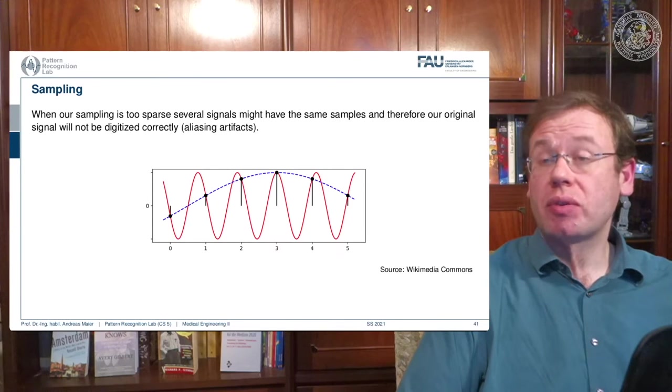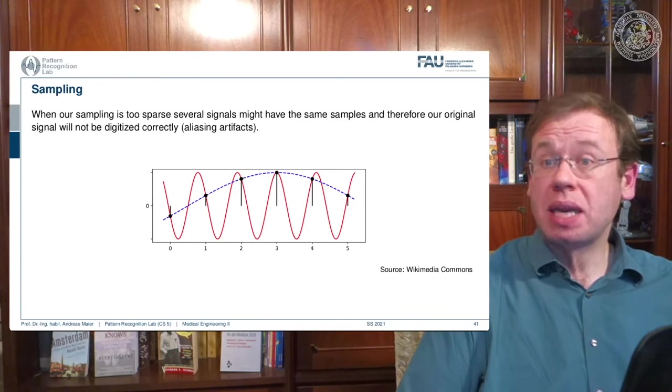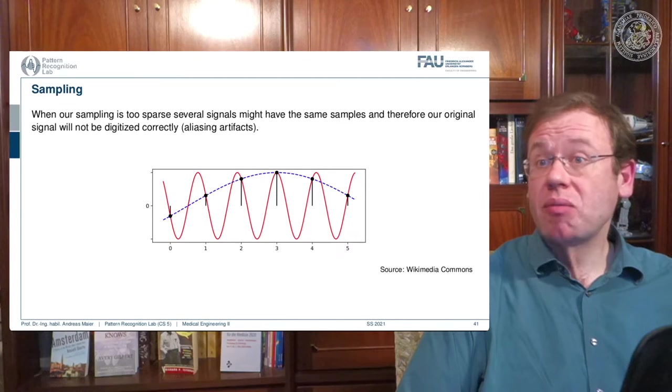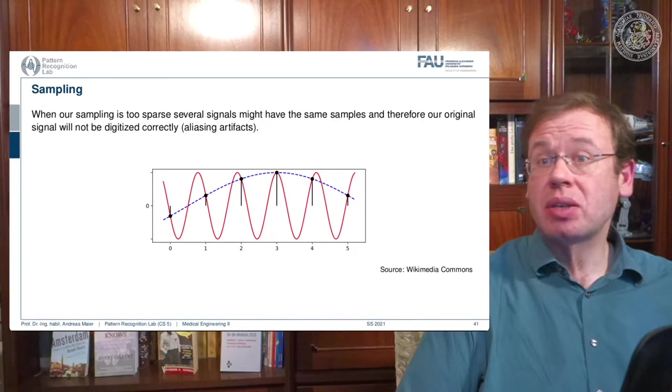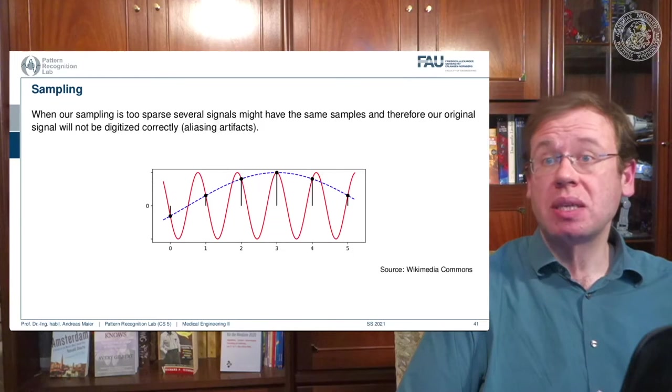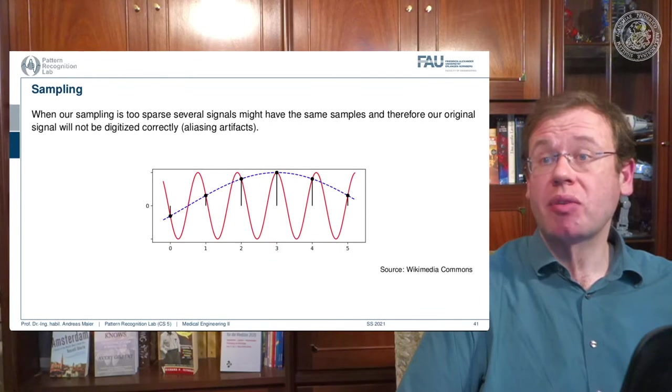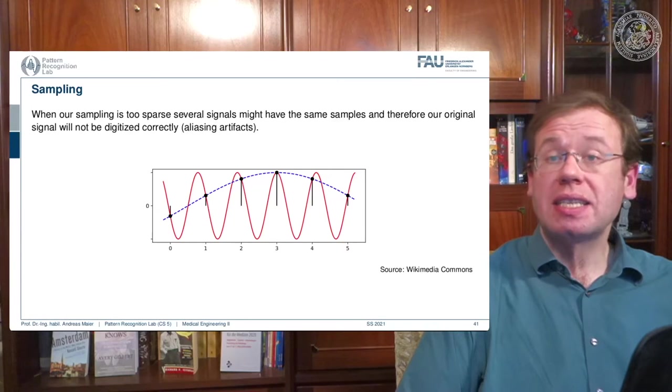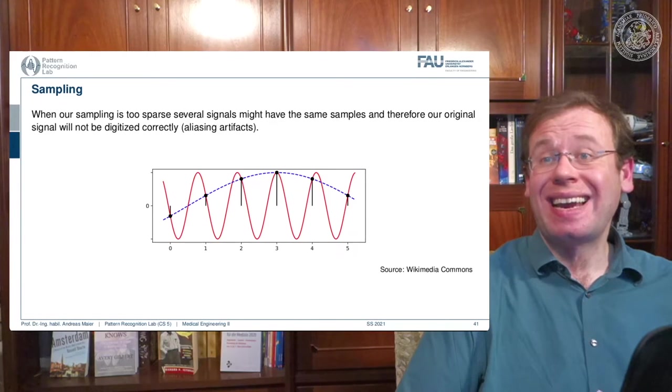And if you look very closely, you see that these black dots, they can be explained by a different sine wave, they actually can be explained by a sine wave of a much lower frequency. And this effect is called aliasing.